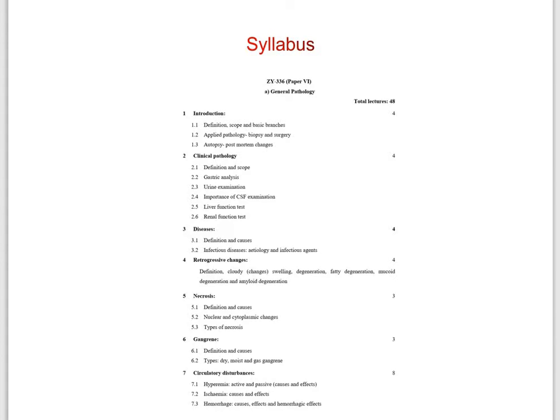In the second chapter, clinical pathology, the subchapters include definition and scope of clinical pathology, then gastric analysis, urine examination, importance of CSF examination — that is cerebrospinal fluid examination — then liver function test, and renal function test.